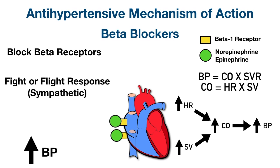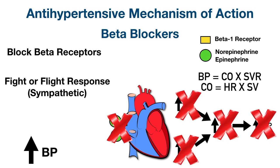We'll talk more about these equations when we get to the final column of the chart. Beta blockers lower blood pressure primarily by blocking the sympathetic activation of beta-1 receptors in the heart. If we block these receptors, norepinephrine and epinephrine can't bind, heart rate and stroke volume decrease, thereby decreasing cardiac output and controlling blood pressure.